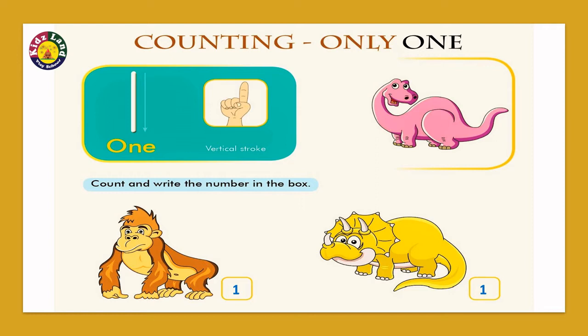How do we show it? We show it with our pointer finger. We write a standing line for 1. And what is the spelling of 1? It is O-N-E 1.